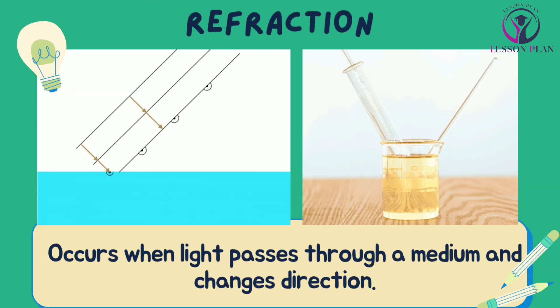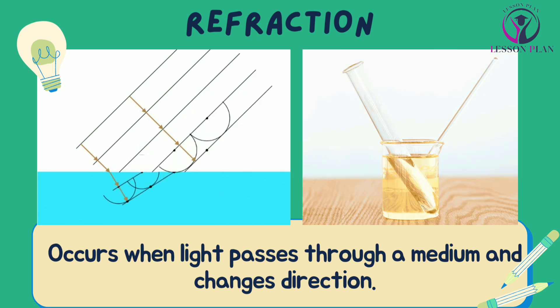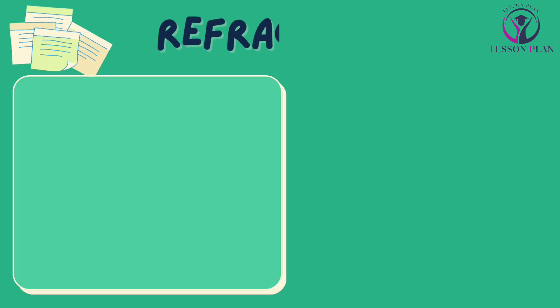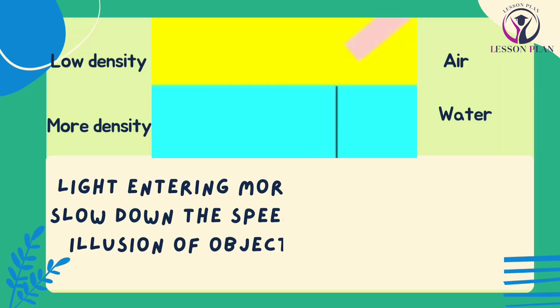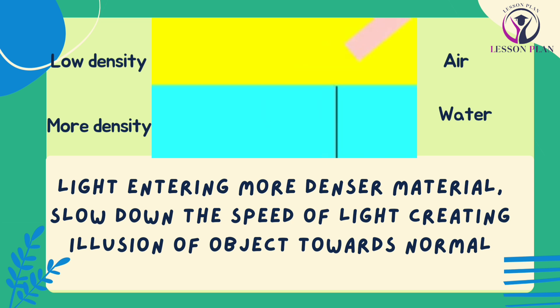Refraction is the bending of light as it passes from one medium to another, such as from air to water or from glass to air. It occurs when light travels at different speeds in different mediums, which causes the light to change direction. When light enters a medium that has more density than the medium it was travelling in — such as when it passes from air to water — the light is bent towards the normal, which is an imaginary line perpendicular to the surface of the medium. This is because light travels more slowly in water than it does in air.